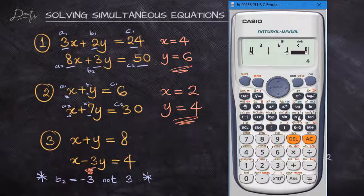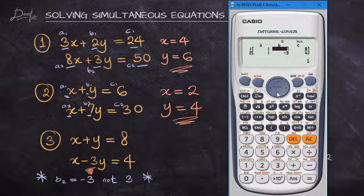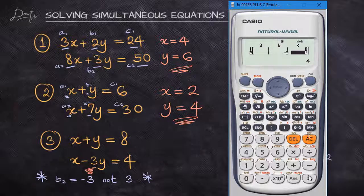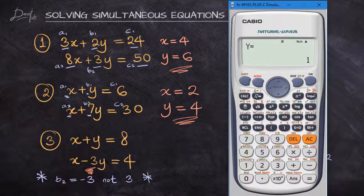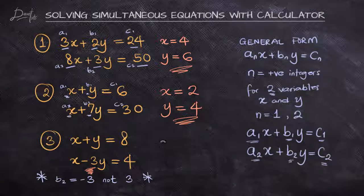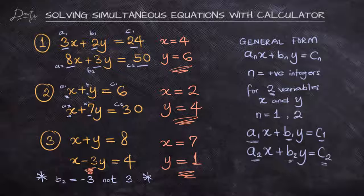Checking for all the values for any error, once you're clear there's no error, press equals and you have x is 7 and y is 1. You can also check that 7 plus 1 will give us 8, and then 7 minus 3 times 1 is 7 minus 3, which is 4.